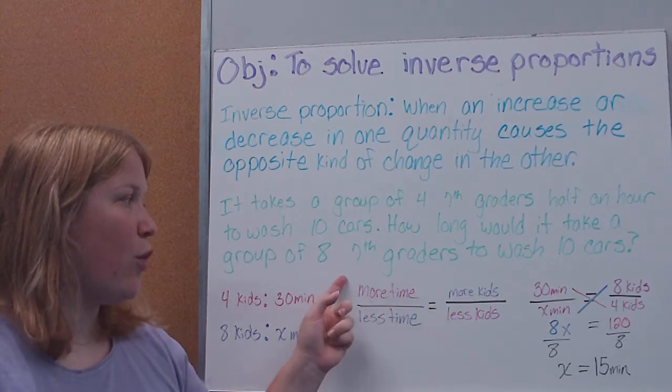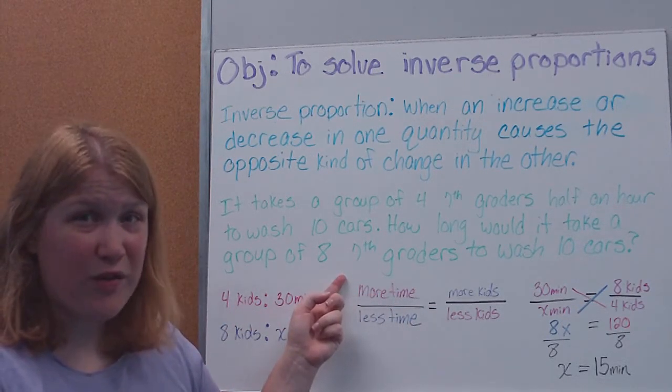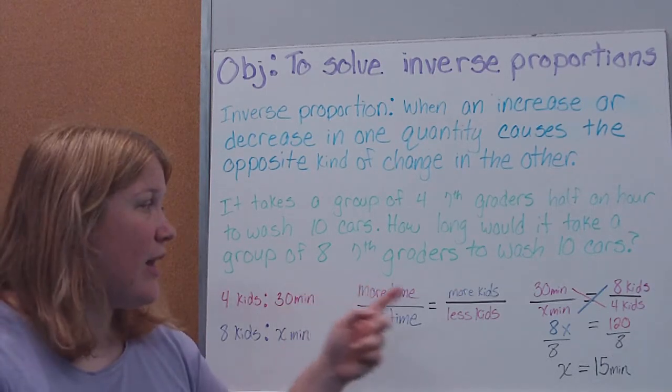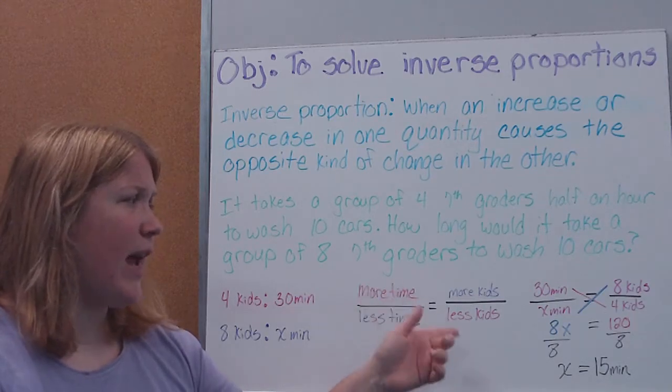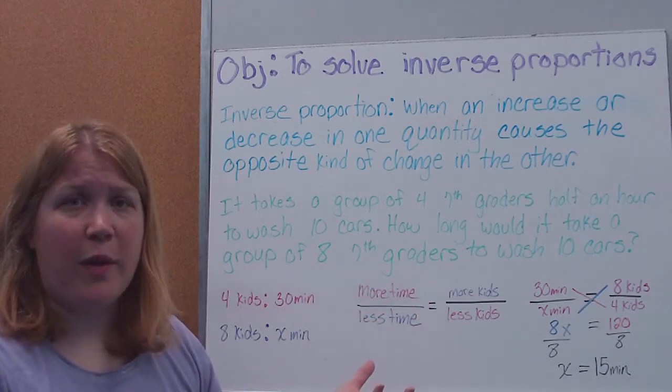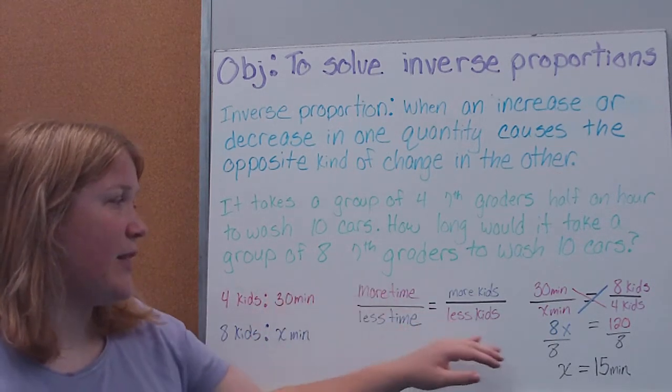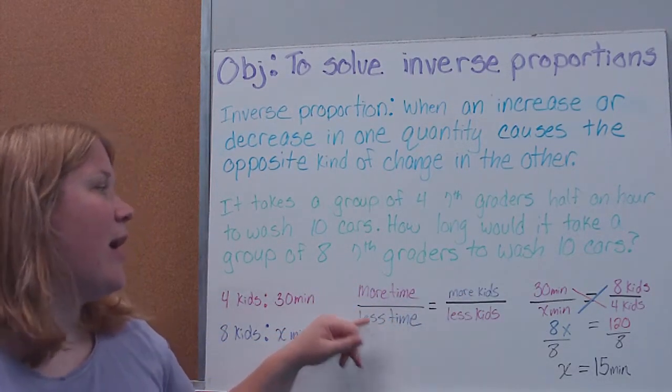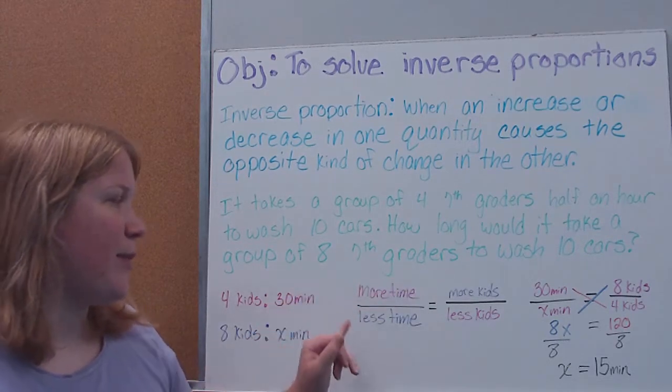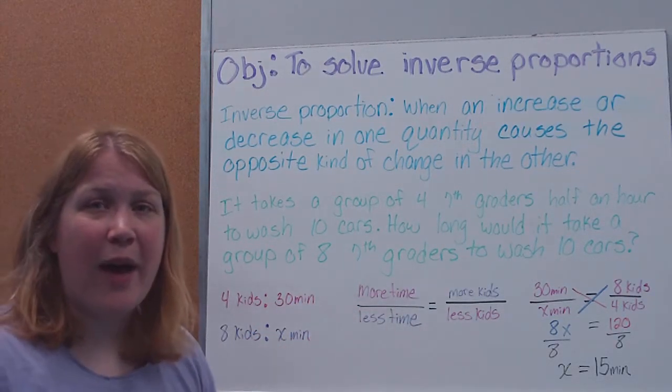So, this one we have to think through a little more. You have to think about how to set it up, and I'm not going to lie to you. I have to stop and think about inverse proportions to make sure that I set them up properly as well. So, what you want to think about here is in terms of more or less. If you keep that straight in your head, you should set it up properly. So, if we think about this, more time, and you'll notice I tried to color code this. It takes less kids, more time. So, you'll notice that they're not across from each other like they have been.